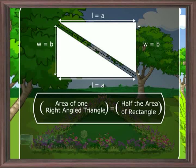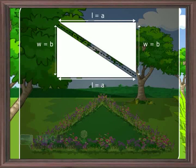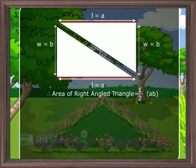Therefore, the area of the right angled triangle becomes half of length into breadth, or a into b. As a is the base of the triangle and b is the height of the triangle.